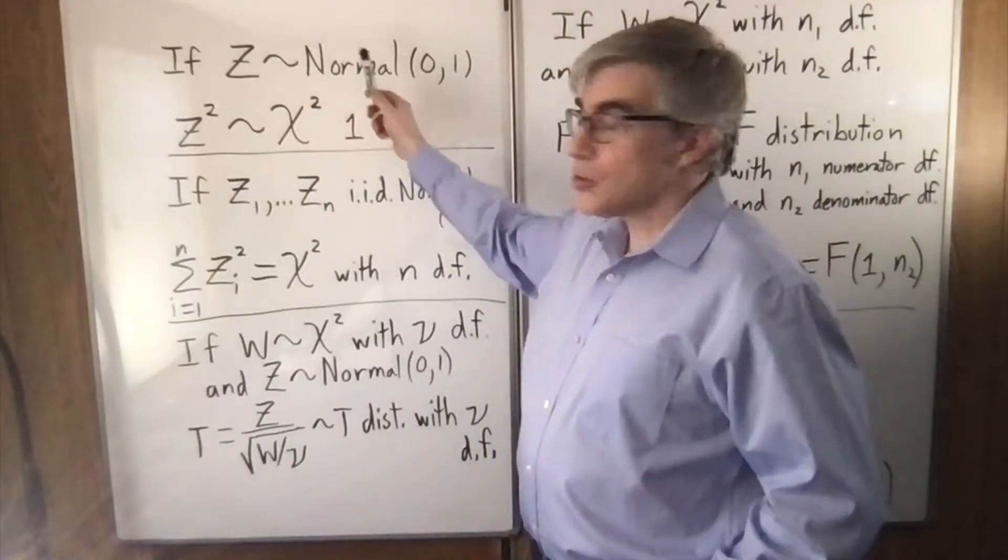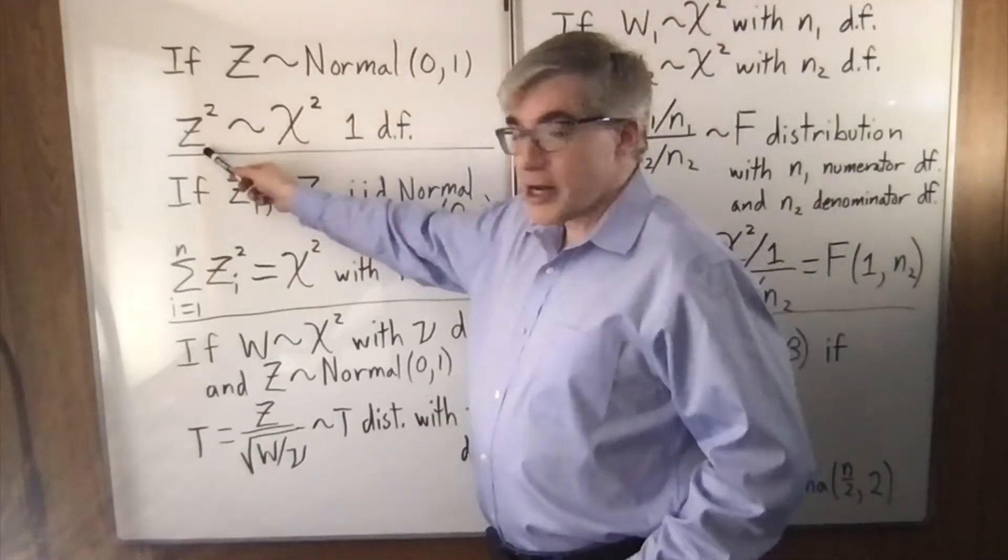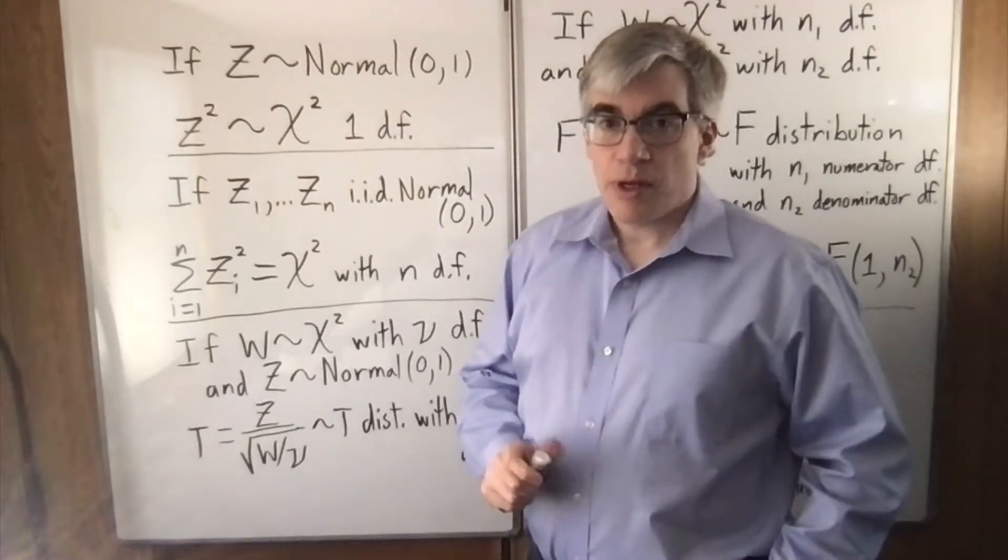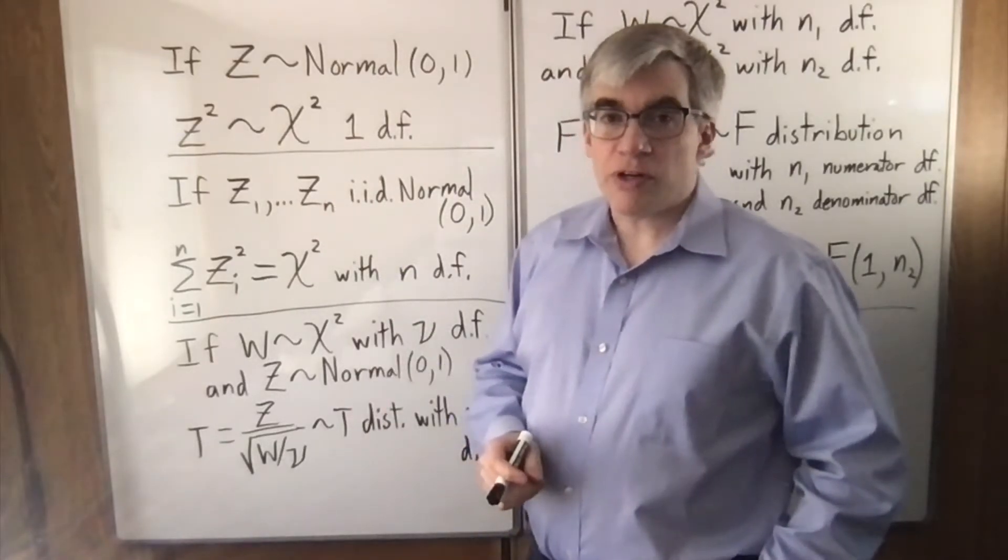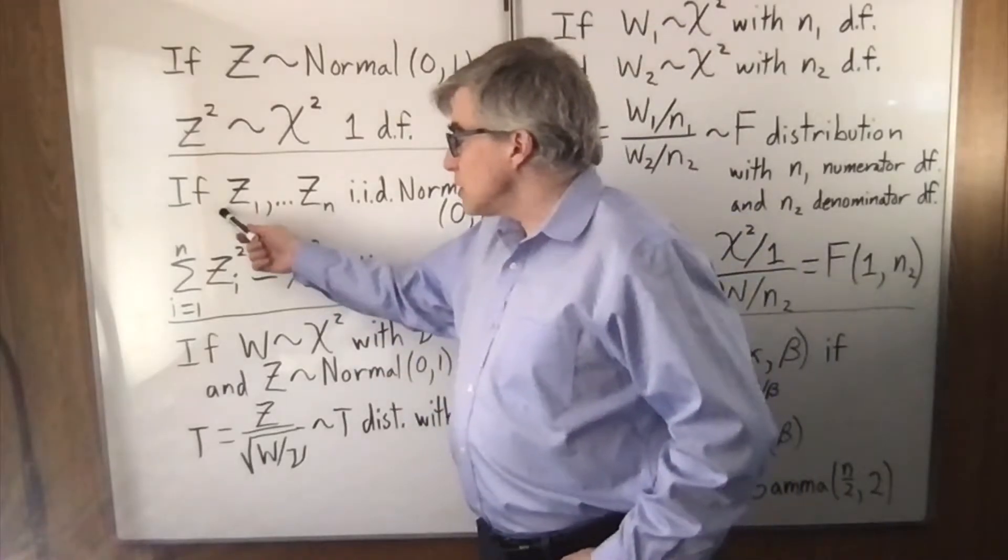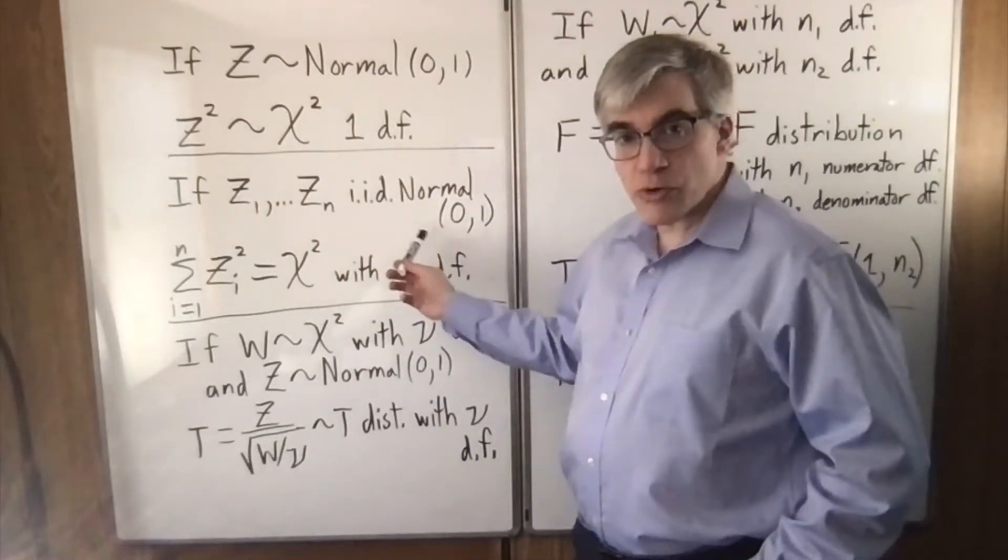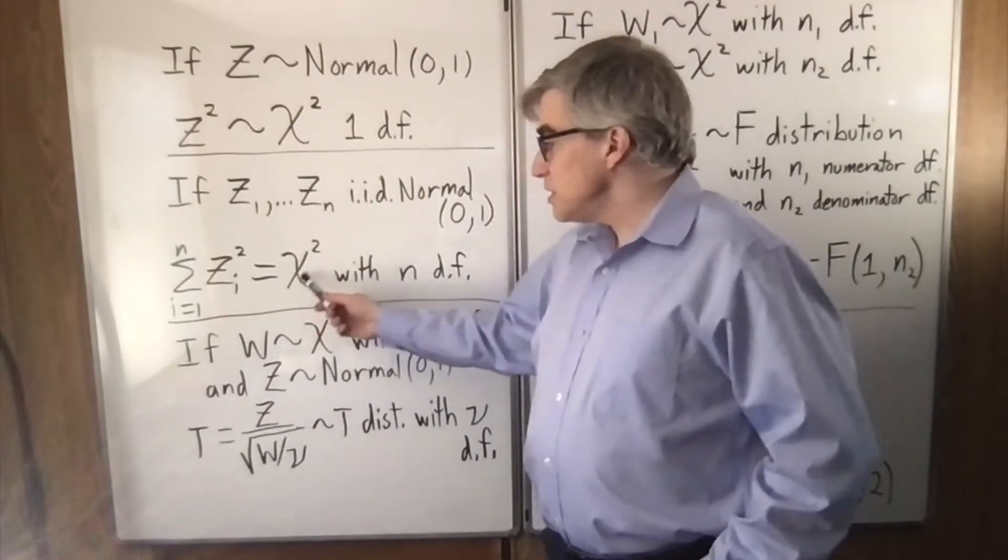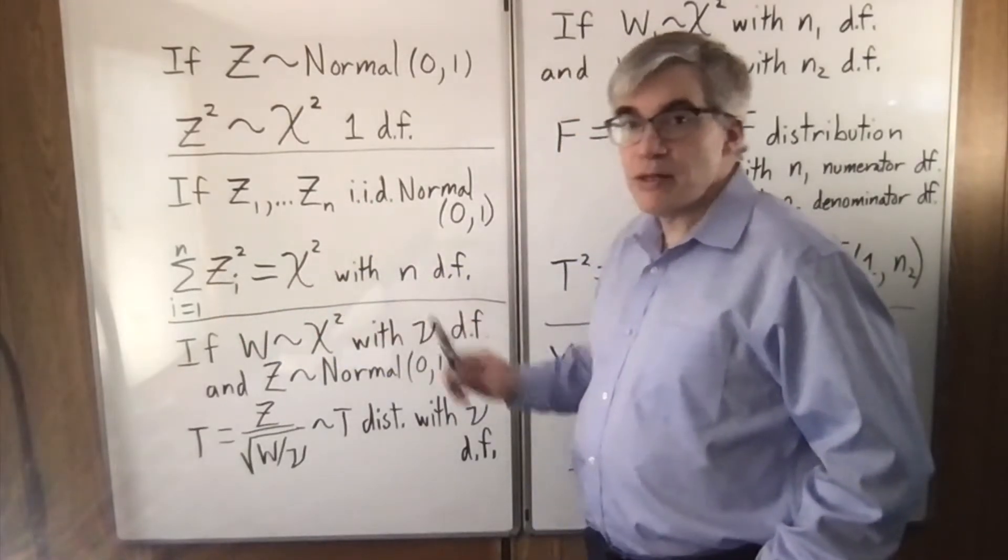If z has a standard normal distribution, z-squared turns out to be chi-square distributed with one degree of freedom. This can be proven with moment generating functions. If you have a set of independent standard normal random variables, the sum of their squares is a chi-square distribution with n degrees of freedom.